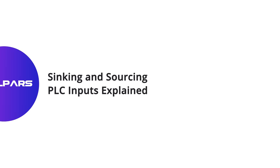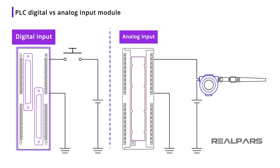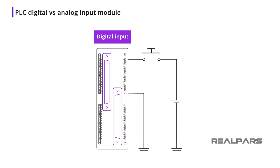The two types of PLC input modules are digital and analog. A digital input module accepts inputs from digital devices such as switches and proximity sensors. The input module will detect one of the two possible conditions of an input device — open or closed. For example, a push-button switch is a digital device and can either be open or closed. We will examine how the input module detects the input device condition later in this video.